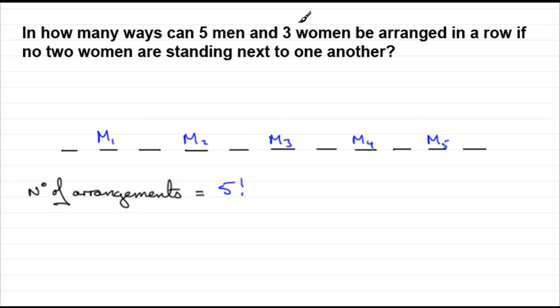Now if we look at the women. Let's just put them down here. W1, W2, W3 for the three women. Now for any time that we have an arrangement of the men in any of these five factorial ways, a woman has a choice of one, two, three, four, five, six. Six places to stand. That's the first woman.